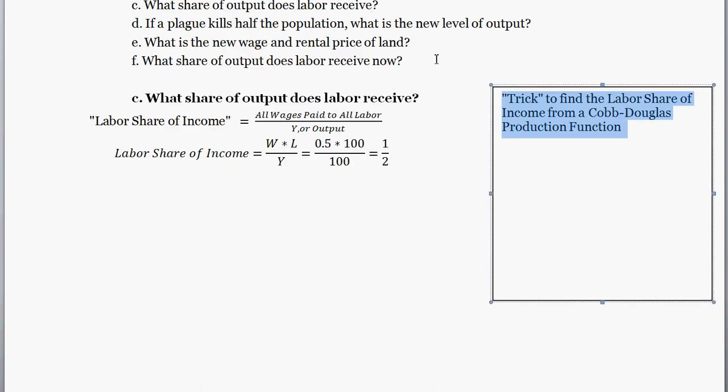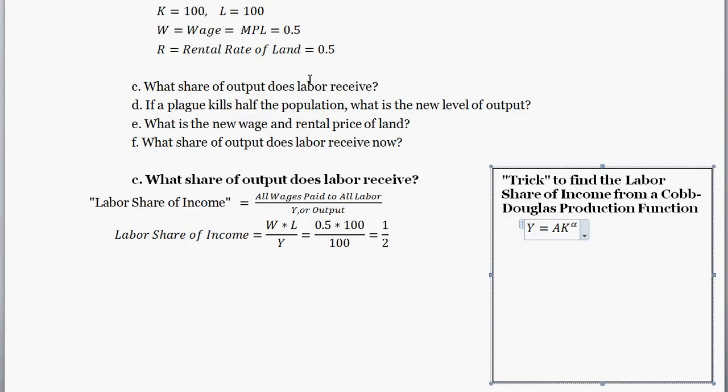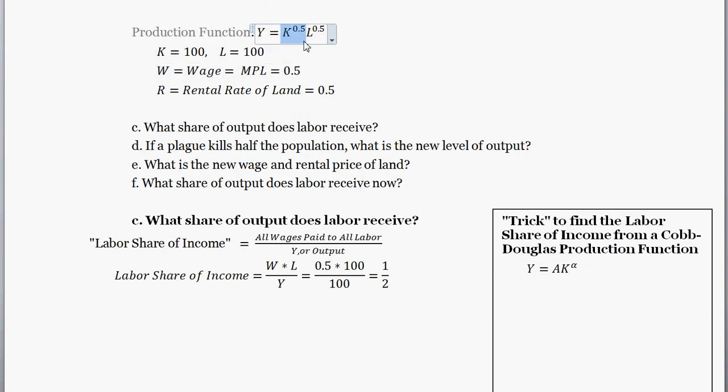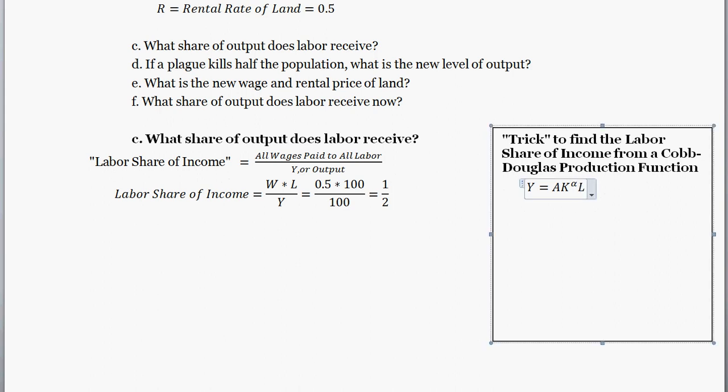Cool. And then also useful to know, I'm going to show you this little trick to find the labor share of income, and the capital share of income, for any Cobb-Douglas production function. So first off, a Cobb-Douglas production function takes this form. So Y output is equal to the following. So A is technology. K is one of the factors, and some input that you can put in is raised to the alpha. In this case alpha, in this production function alpha was one-half, because K is raised to the one-half.